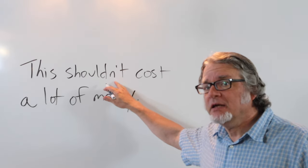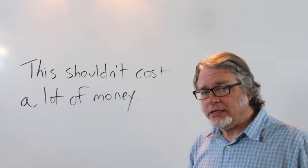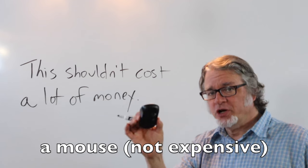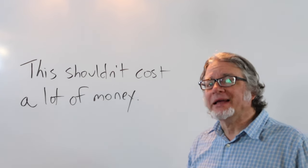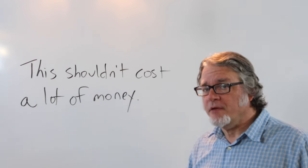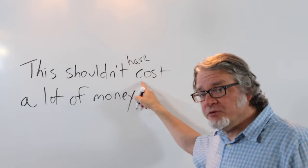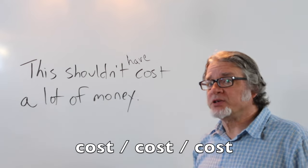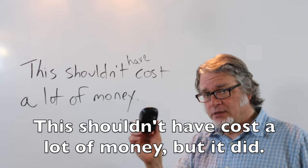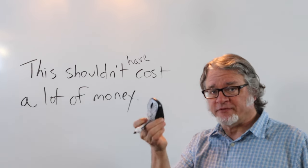Here's the negative before the main verb. This shouldn't cost a lot of money. If it's something cheap such as a mouse, this shouldn't cost a lot of money. I don't expect it will cost much. If I put this in the past, have goes here and this can remain the same because this is the past participle for cost. This shouldn't have cost a lot of money, but it did. So it actually did cost a lot of money.